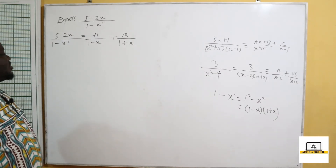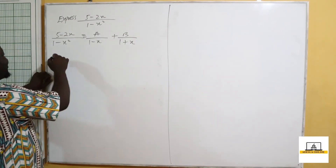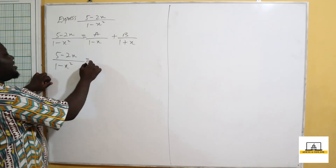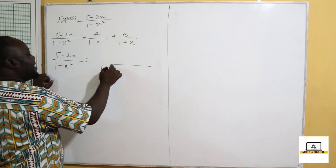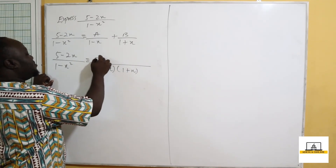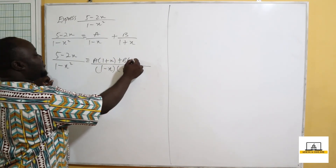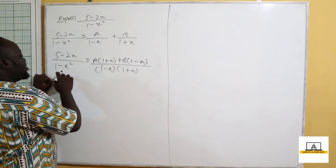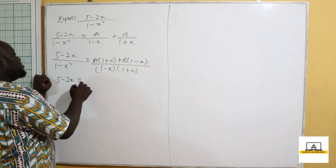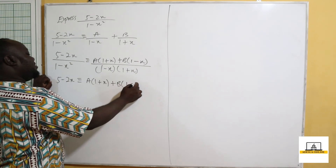Let's solve for A and B. We have (5−2x) over (1−x)(1+x) equals A over (1−x) plus B over (1+x). The LCM is (1−x)(1+x), giving: 5−2x equals A(1+x) plus B(1−x).